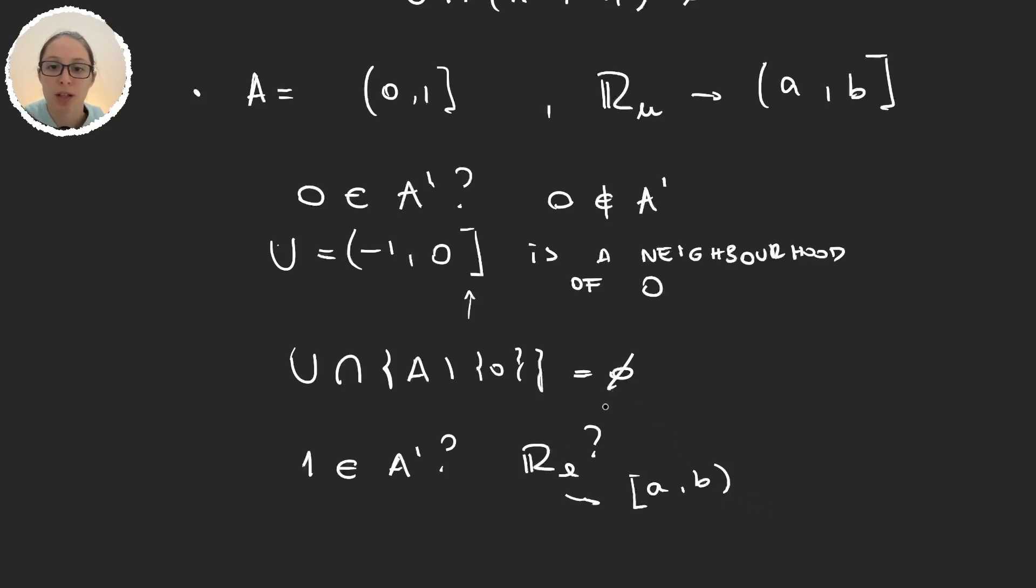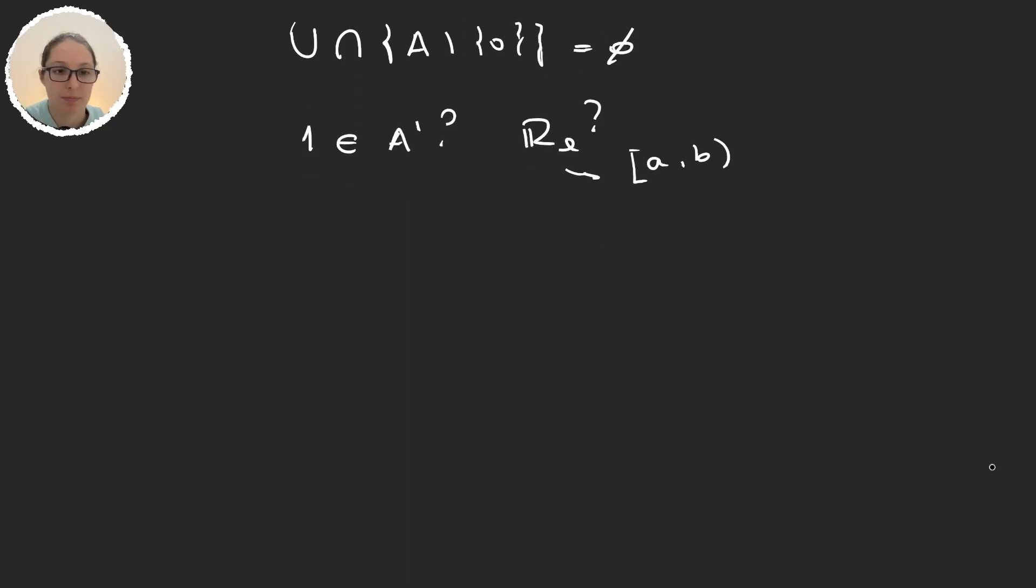Well now that we are sort of understanding the limit points, let's see a theorem. This theorem tells us that the closure of a set is the union of the set itself with the limit points. And the proof is very simple.